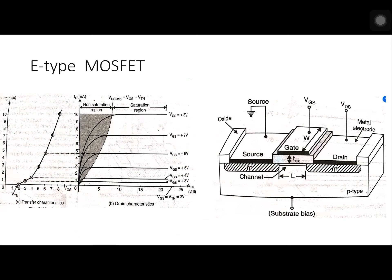Once the channel is formed, apply positive voltage between drain and source and the device functions similar to D-type MOSFET. Just remember: no negative VGS is allowed. Apply positive VGS and keep increasing it — you will get enhancement mode operation. The non-saturation region is also called the ohmic region, and beyond that is the saturation region. In the transfer characteristic, no current exists below the threshold voltage.